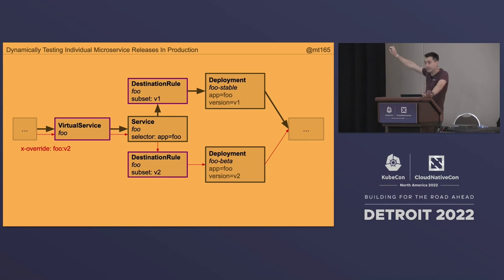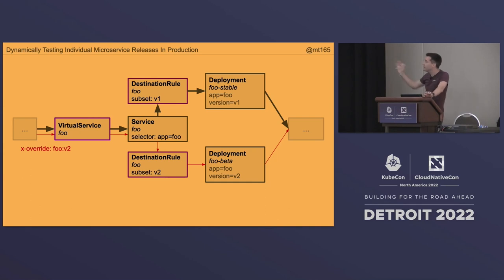I can add config to the virtual service to say: if the request comes in with a header like 'x-override: foo-v2', send it off to v2 instead. So arbitrarily anywhere down that chain, if you've got a header that says 'I'd like to override foo to v2,' we can send it through v2 and then back into the chain as normal. This is how we do override testing — this is how we recreate what Lyft did, and how we configure it with Istio.